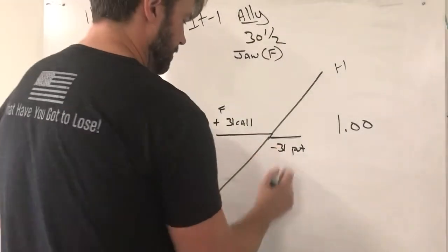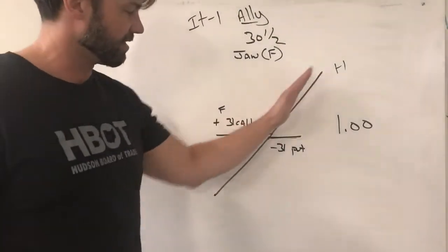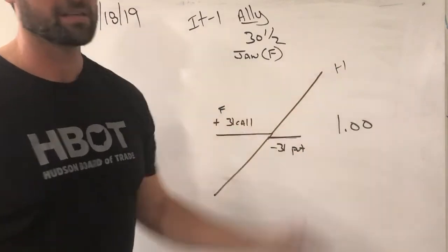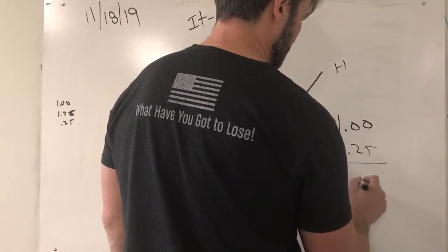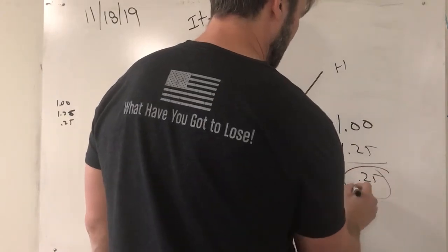This creates a synthetic stock position, positive one slope. When we sell that put, we're gonna collect a dollar twenty-five. So a twenty-five cent credit.